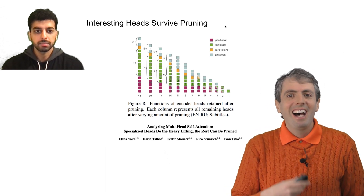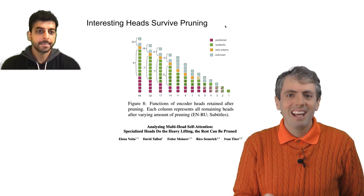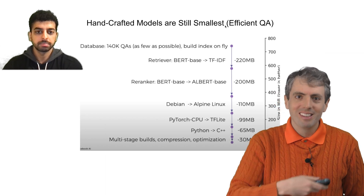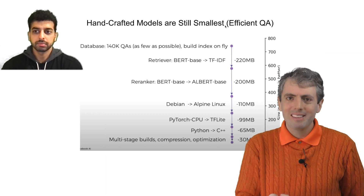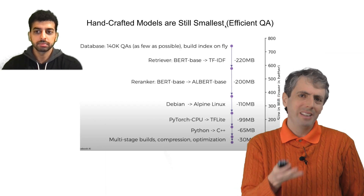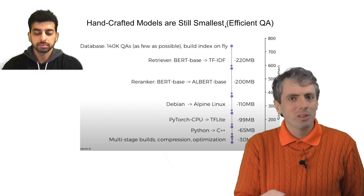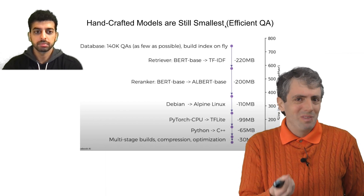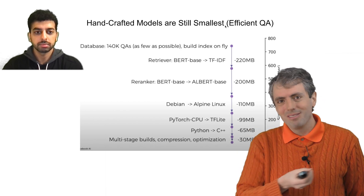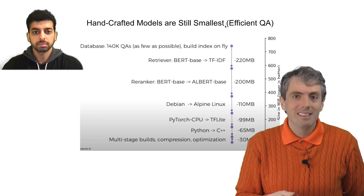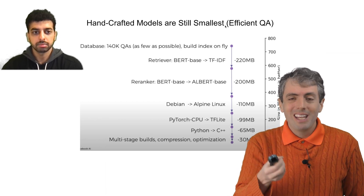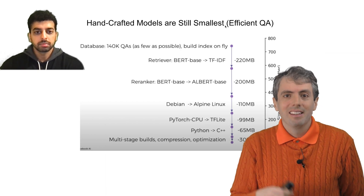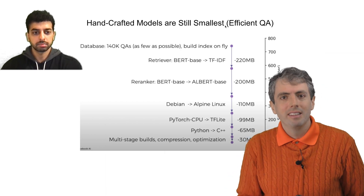That's kind of satisfying. And for question answering, an area that we both worked on, the results of the efficient QA competition we ran in 2020 seem to show that to get truly tiny models on the order of megabytes, you can't really use BERT even if it's really finely distilled. You have to handcraft a new model for the task. There's a link to the videos for that competition in the description.